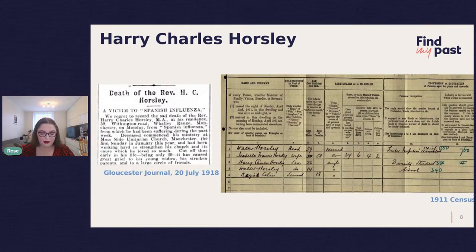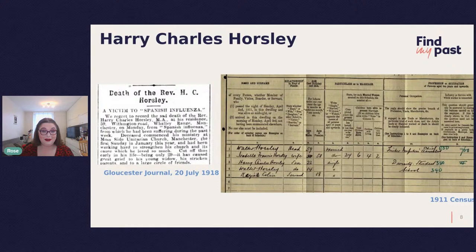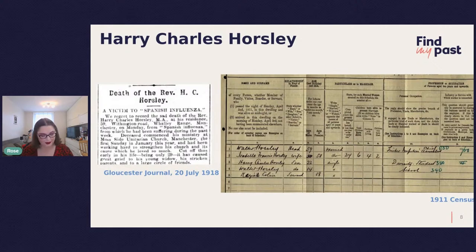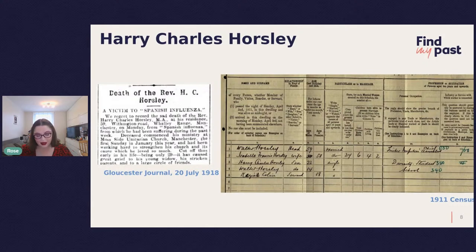A few weeks later, the Gloucester Journal reported on the death of Reverend Harry Charles Horsley, also from Spanish influenza. He was from Whalley Range in Manchester, just 29, and had a young wife. We can see Harry's record in the 1911 census where he was listed as a divinity student — by the time of his death he had gone on to become a minister and had also married. What was particularly moving was the description of his funeral, held at the Manchester Crematorium. The chief mourner was his mother, for his widow and his sisters were unable to be present owing to illness — like many during the recent COVID-19 pandemic, they couldn't attend to mourn him as they might have liked.